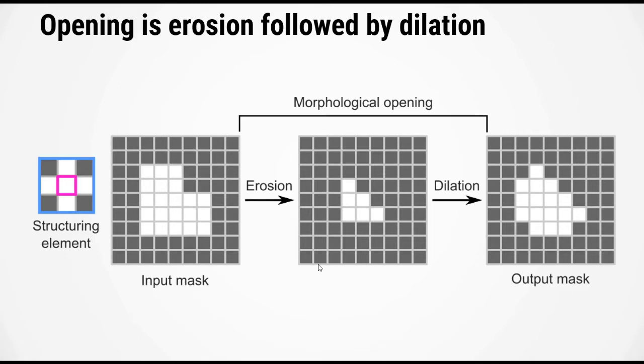Now this whole process of erosion and dilation is called opening. Now one thing I'd like to point out is that if you compare the size of the output mask after opening it is close to the size of the original input at least compared to the first eroded mask. This is one of the advantages of using opening. It keeps the size of the objects and the output similar to the size of the objects in the input.